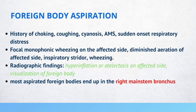In these patients, you'll hear focal monophonic wheezing on the affected side — so it's typically unilateral. There will be diminished aeration of the affected side, inspiratory stridor, and even wheezing. Radiographic findings include hyperinflation or atelectasis on the affected side. You can even visualize the foreign body sometimes. Most aspirated foreign bodies end up in the right main stem bronchus.